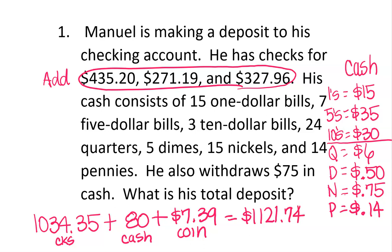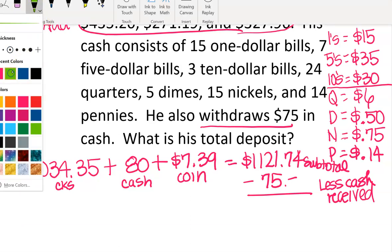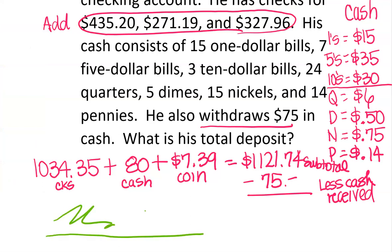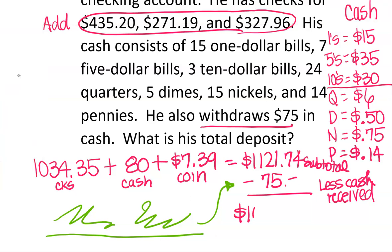That's the subtotal. Now, what it's also asking is that Manuel wants to withdraw $75 in cash. That takes his balance lower — it goes in the 'less cash received' spot. The person will sign their name to verify they received the cash. So subtracting $75, his total deposit is $1,046.74.